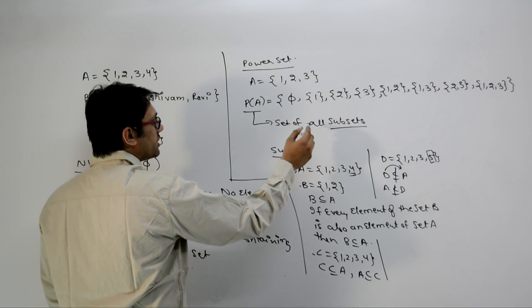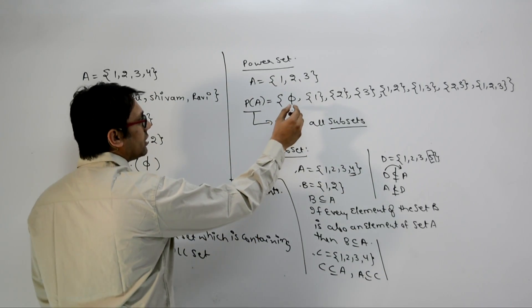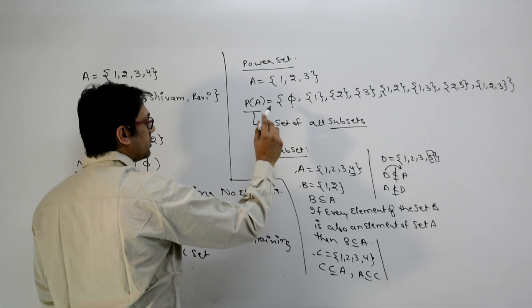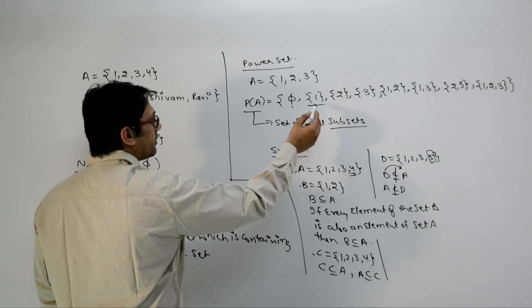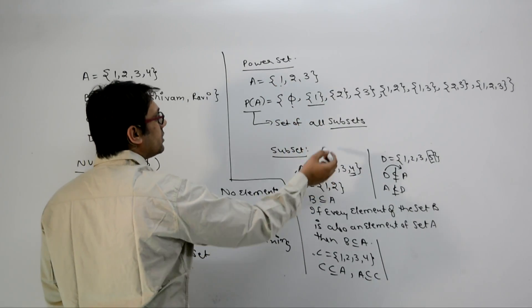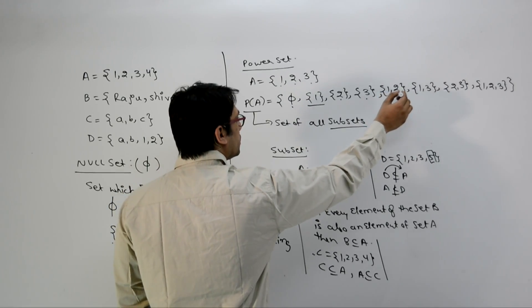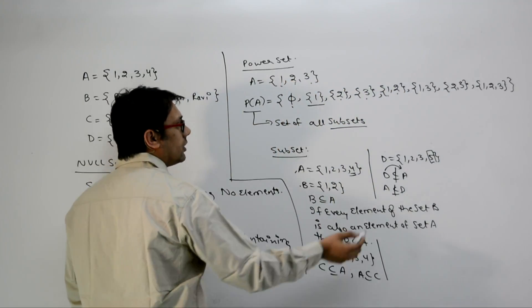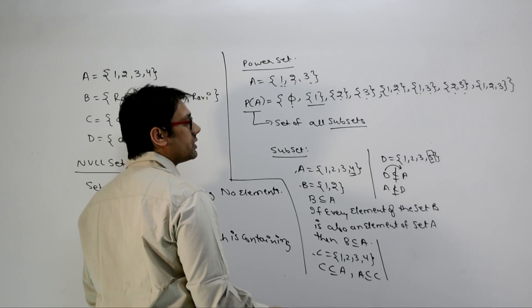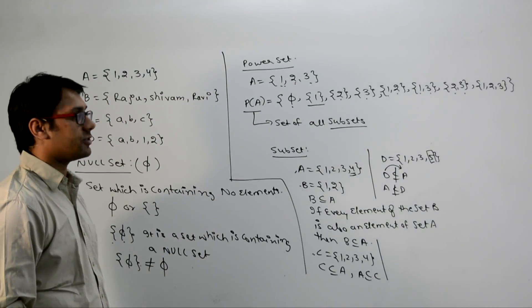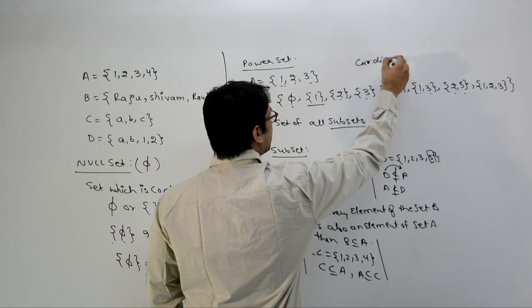In the power set, every element listed is a subset of A. Phi is a subset, {1} is a subset since 1 is in A, {2} and {3} are subsets, {1,2}, {1,3}, and {2,3} are subsets, and {1,2,3} is also a subset since all elements are present in A.